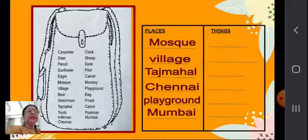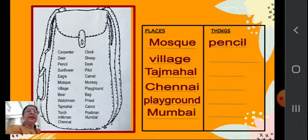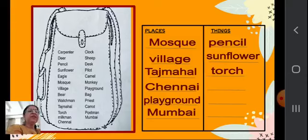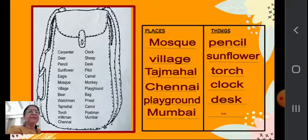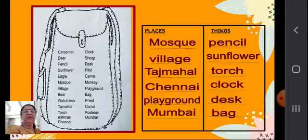Now let us write things: pencil — all of you are writing with the pencil — sunflower (S-U-N-F-L-O-W-E-R), torch (T-O-R-C-H), clock (C-L-O-C-K), desk (D-E-S-K), bag (B-A-G), and carrot (C-A-R-R-O-T). With this, we have completed this activity.